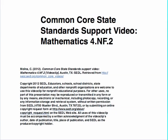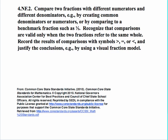This is a Common Core State Standards Support Video in Mathematics. The standard is 4NF2. This standard reads: compare two fractions with different numerators and different denominators, for example by creating common denominators or numerators, or by comparing to a benchmark fraction such as ½. Recognize that comparisons are valid only when the two fractions refer to the same whole. Record the results of comparisons with symbols greater than, equal to, or less than, and justify the conclusions, for example by using a visual fraction model.